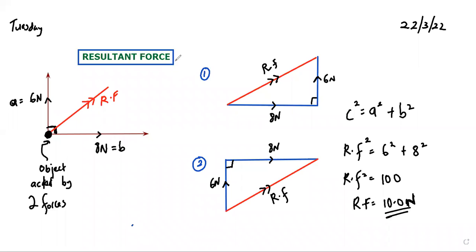We are looking at resultant force for Form 5 Chapter 2. We want to identify where an object will move when acted upon by two forces. We have force A and force B acting on one object — force A with a value of 6 newtons and force B with 8 newtons. Logically, the object will be moved in between them.